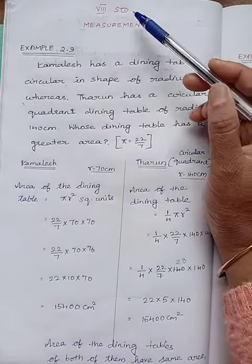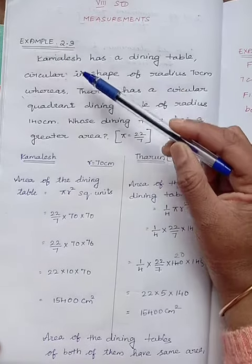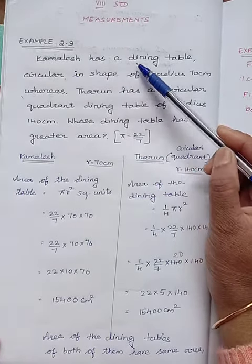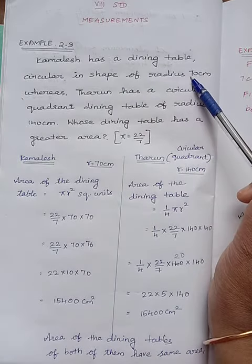Hi children, today we are going to learn 8th standard measurements example 2.3. Kamalesh has a dining table circular in shape of radius 70 cm.